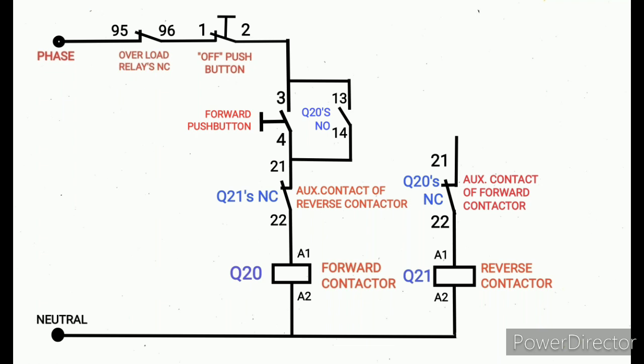Next we're going to draw reverse push button. This reverse push button is in series with Q20's NC and the reverse contactor coil terminal A1. We need to connect the main phase to the off push button second terminal.